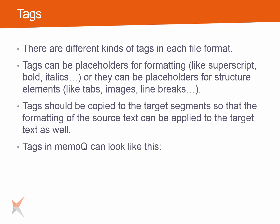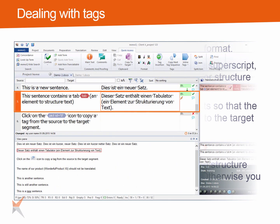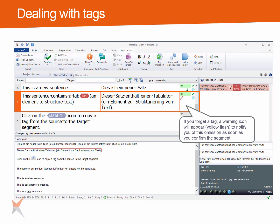Tags in MemoQ can look like this. The ones with the curly brackets are mostly structure tags and have to be kept in the translation — otherwise you cannot export the translation anymore. Working with these tags takes some getting used to. If you forget a tag, a warning icon will appear — a yellow flash symbol — to notify you of this omission as soon as you confirm the segment. Double-click the flash icon to view the error message.